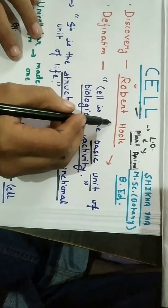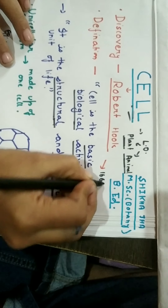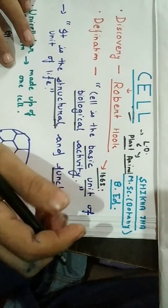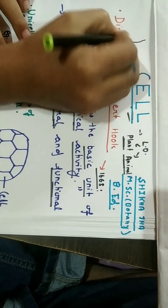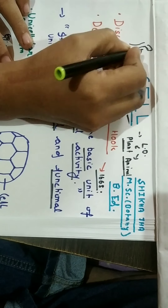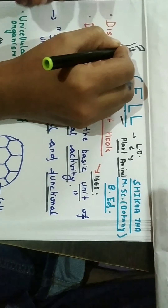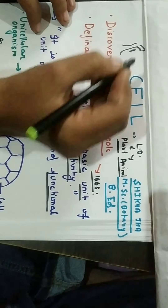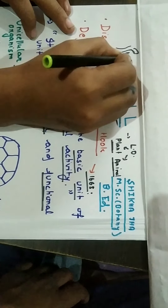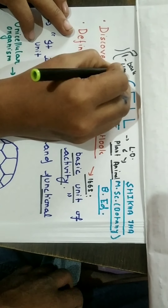The cell was discovered by Robert Hooke in 1665. He discovered the cell in the bark of the plant — the outer part of the plant, which is also called cork. This is the dead part of the plant.